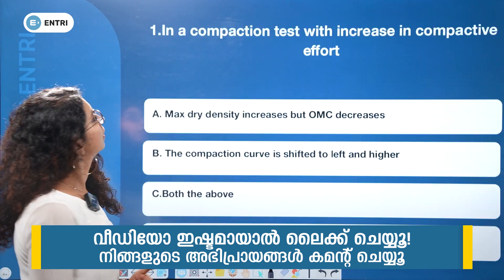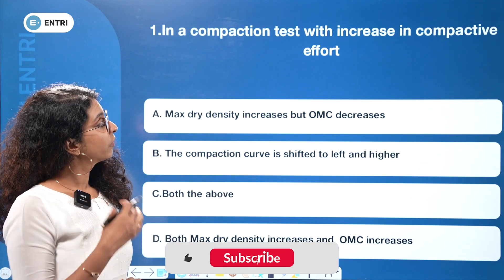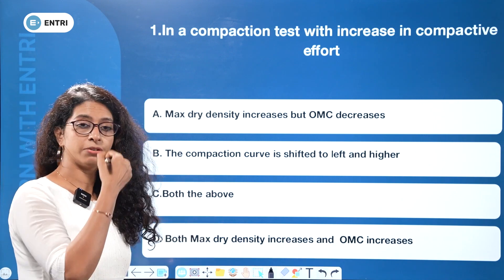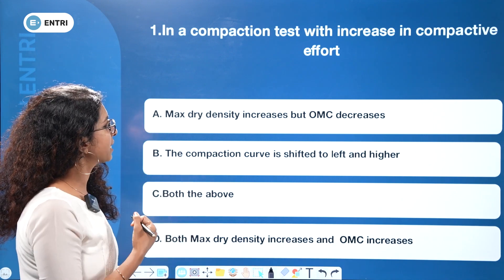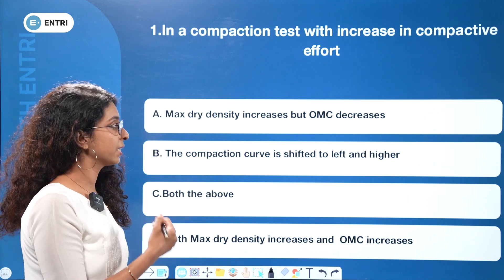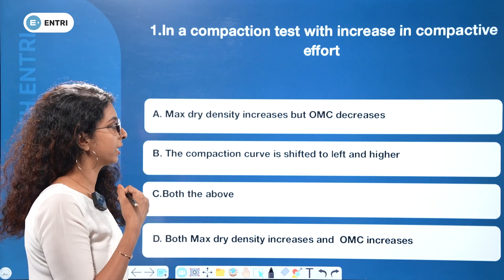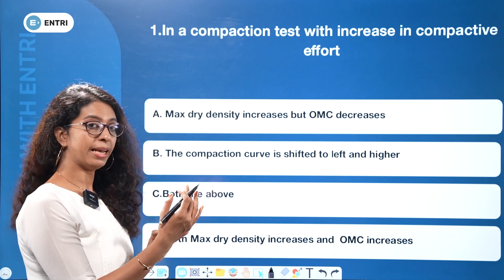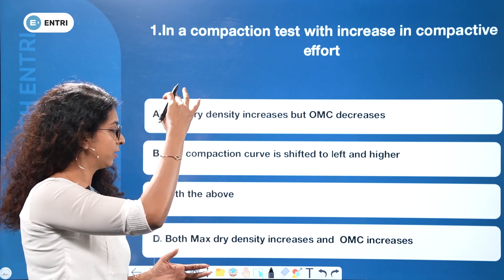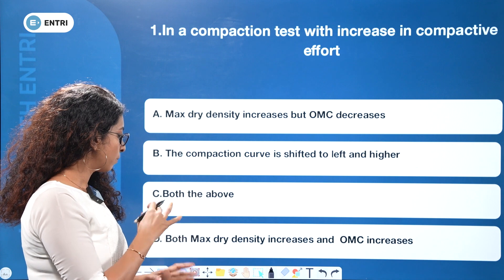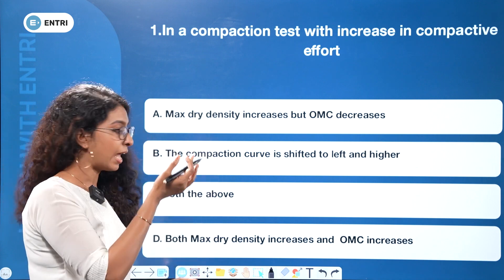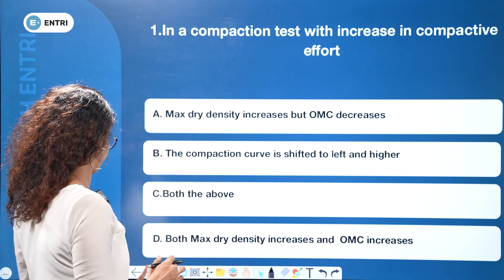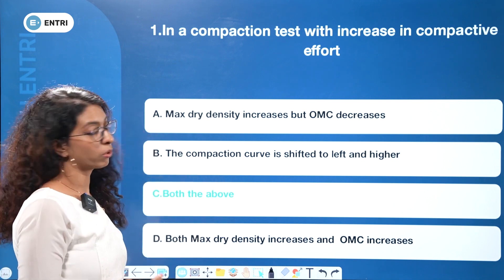First question: in a compaction test with an increase in compactive effort, compactive effort increases — the maximum dry density increases but optimum moisture content decreases. The compaction curve shifts to the left and higher. So both maximum dry density increases and optimum moisture content decreases. The answer is 'both the above.'